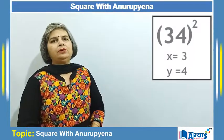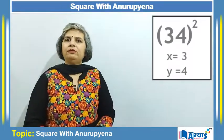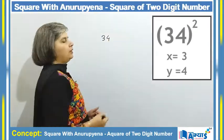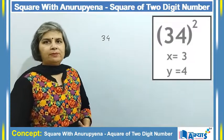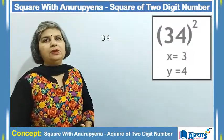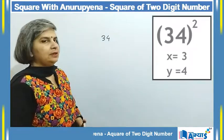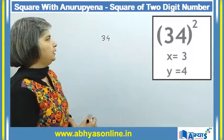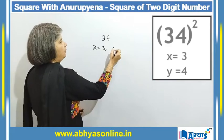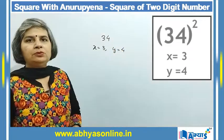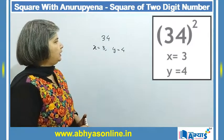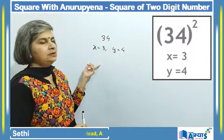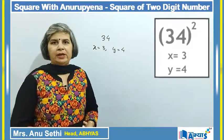Now I am going to use the anurupyana method to find the square of a two-digit number. Let us take the number 34. I will take the digit at the tens place as x and the digit at the ones place as y. So here x will be 3 and y will be 4.